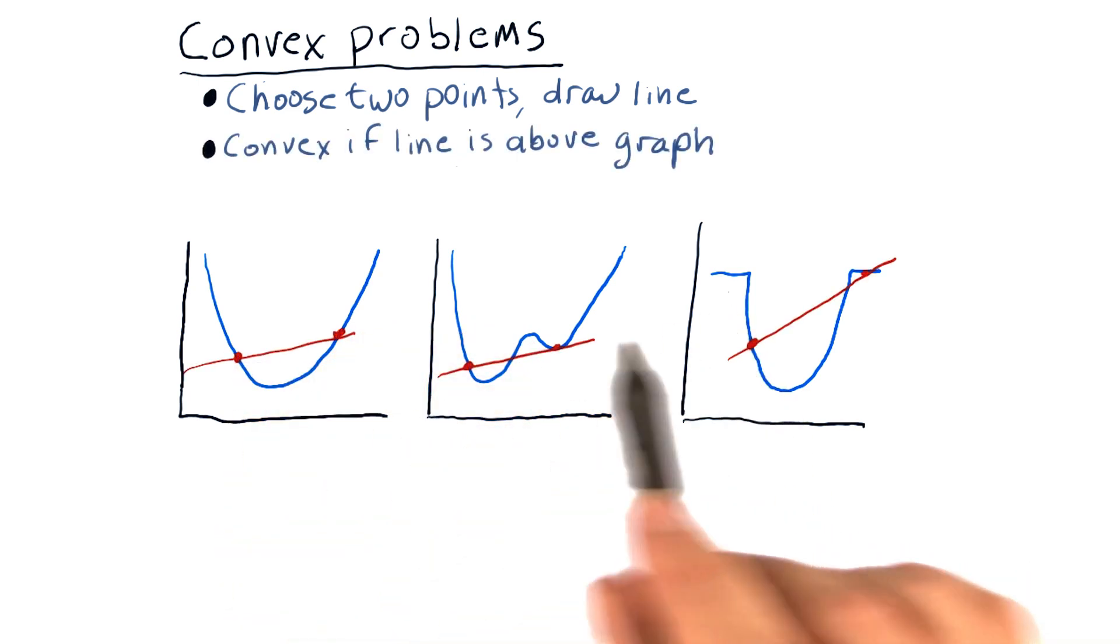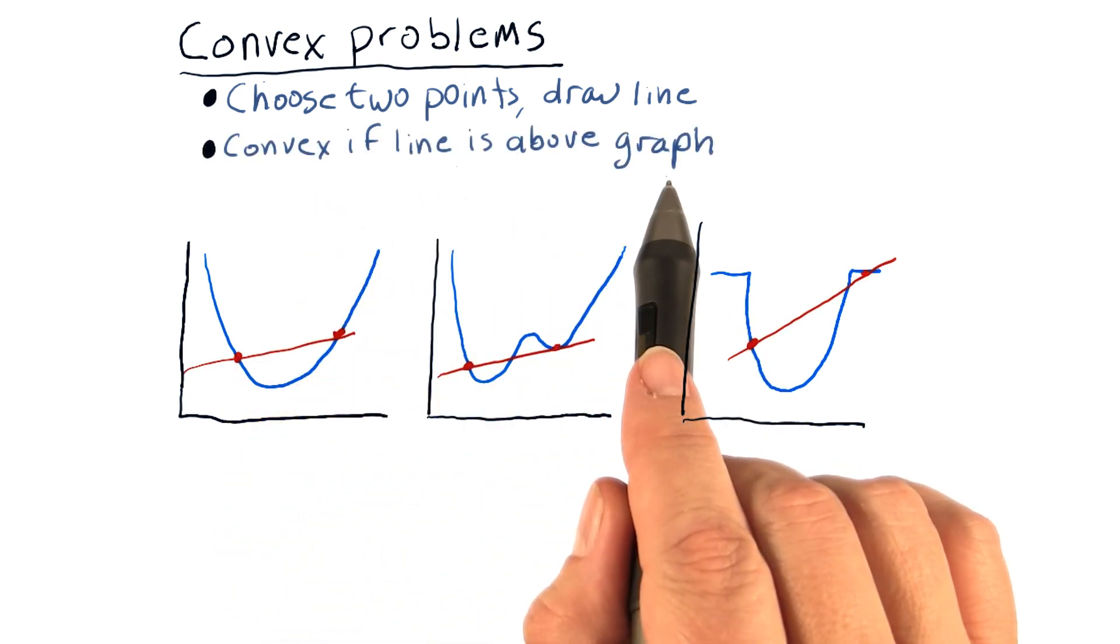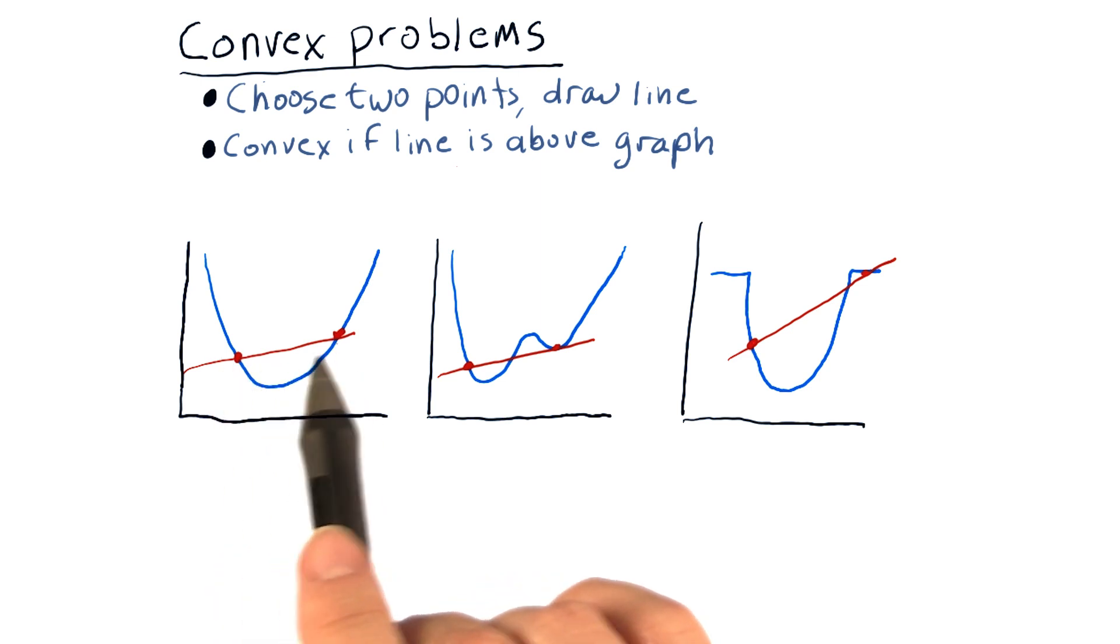Now for each of these lines, if the line is above the graph everywhere between those two points, then the function is convex between those points.